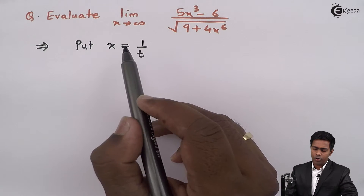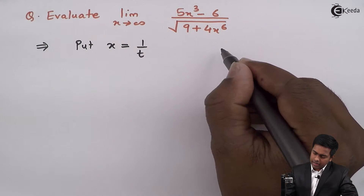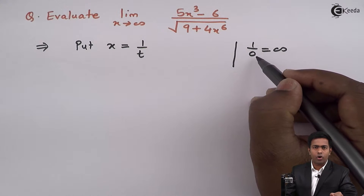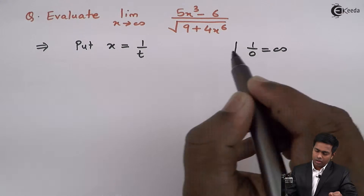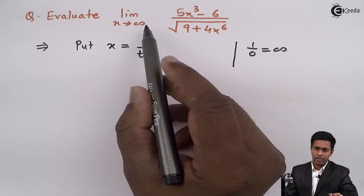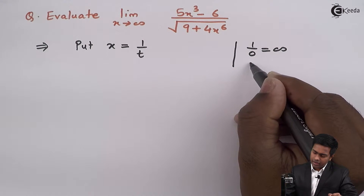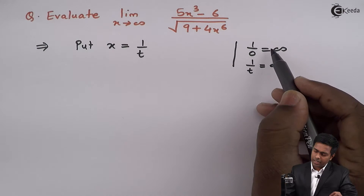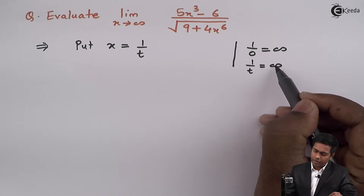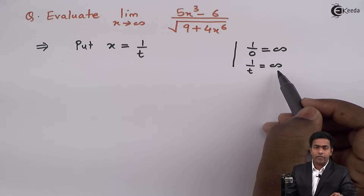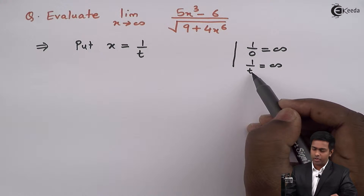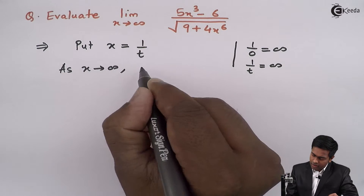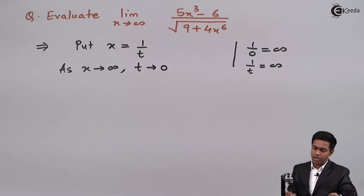Let us understand what the limit for t would be. We know that 1 upon 0 is infinity, so whenever we have 0 in the denominator we get infinity. Here x tends to infinity, so substituting we get 1 upon t equals infinity. This is possible if and only if the denominator is 0, meaning t must be 0. Therefore, as x tends to infinity, t tends to 0.